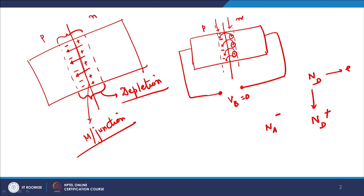This region is primarily devoid of any free charge carriers and is known as the depletion region. Even under zero bias, the PN junction has a fixed depletion width W — this will always be there. Now, why does the movement of free electrons from N-type to P-type stop after some time?